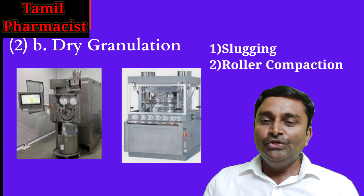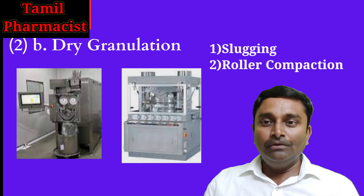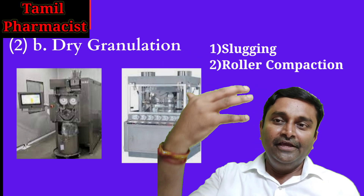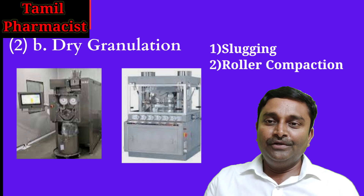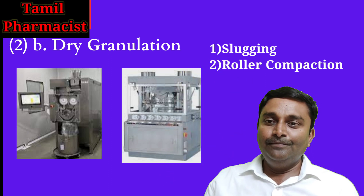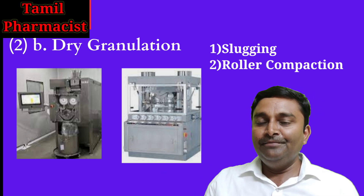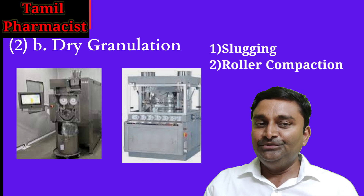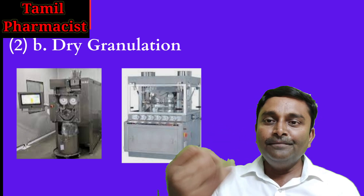The other method is roller compaction. In the roller compaction process, you use a roller compactor. The API and excipients in the proper composition are fed into the roller compactor, which produces flakes. The flakes, when milled, give granules that are somewhat coarser than the original powder. The flow automatically increases, and the granulation process is achieved.